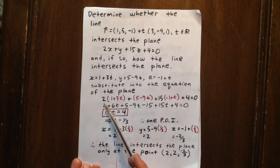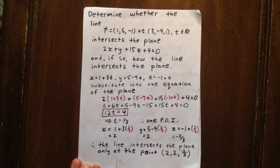From here, we can simply distribute and collect like terms, and we get 12T equals 4. Well, if that's the case, then T is one-third.